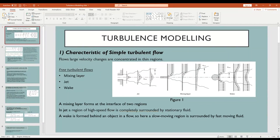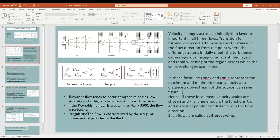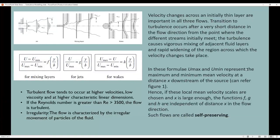For free turbulent flows, there are three types: mixing layer, jet, and wake. The mixing layer forms at the interface of two regions. In a jet, a region of high-speed flow is completely surrounded by stationary fluid. A wake is formed behind an object in a flow, where a slow-moving region is surrounded by fast-moving fluid.